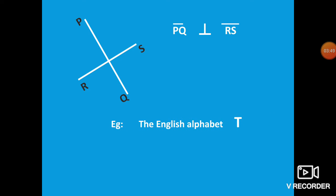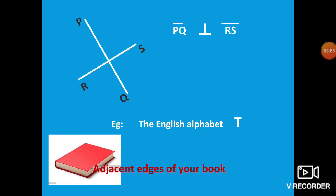One example: the English alphabet capital letter T is an example of perpendicular lines. Another example is the adjacent edges of your book. Take your math textbook — its adjacent edges are perpendicular.